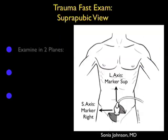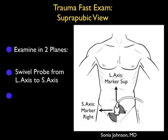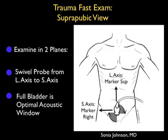Here's a slide reviewing how to perform the suprapubic view of the trauma FAST exam. In contrast to the upper quadrant views where we looked only in a long axis configuration, the suprapubic view is made up of two planes. We want to look in both long and short axis configurations. We'll begin in long axis with the marker dot oriented towards the patient's head, and complete our exam by moving the probe into short axis with the marker dot towards the patient's right side. It's optimal to perform the examination with a full bladder as an optimal acoustic window, so perform the exam prior to having the patient void or placing a Foley catheter.